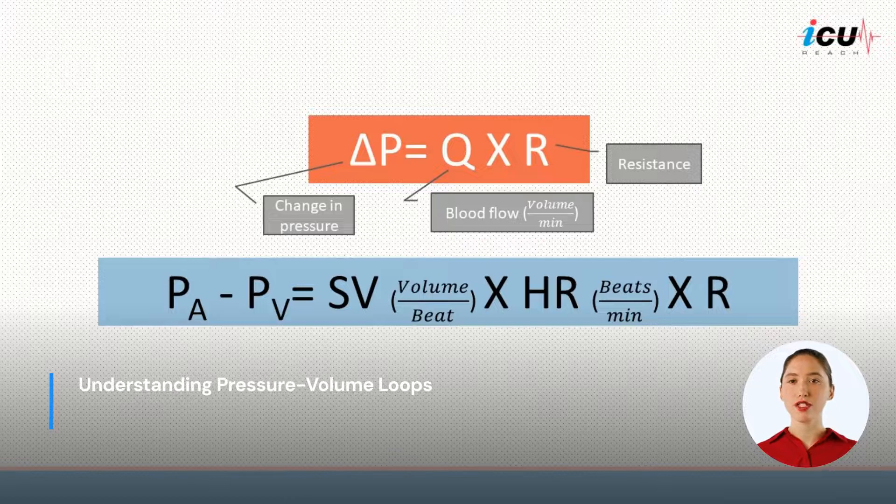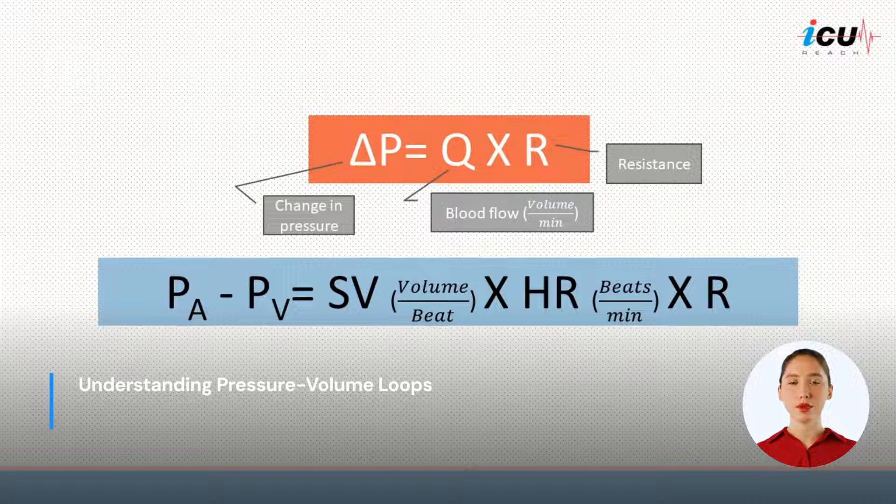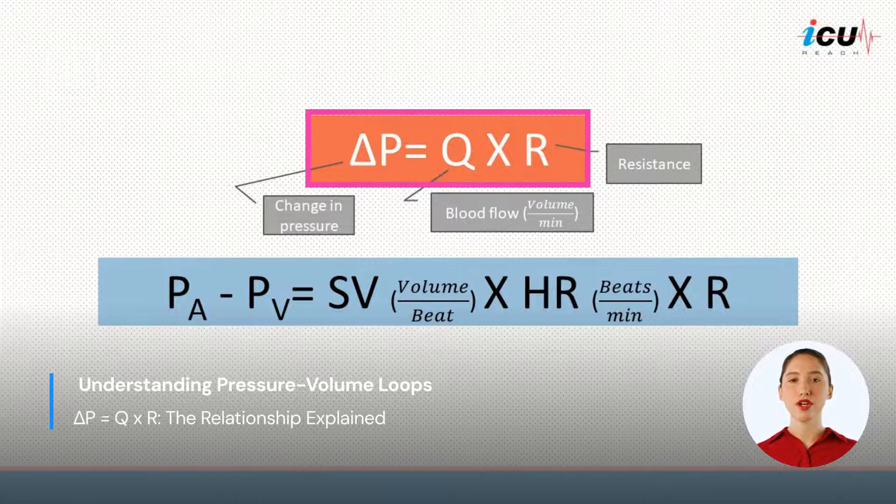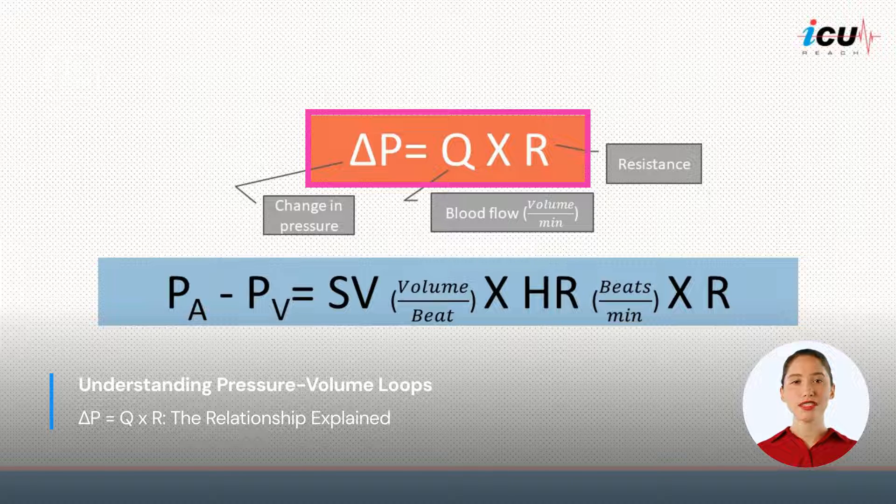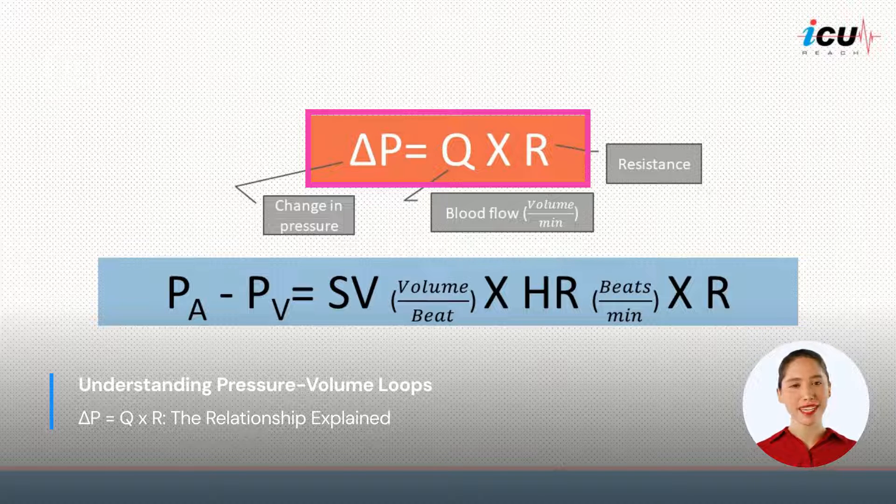We've been talking a lot about pressure volume loops, but we haven't talked about this formula: change in pressure equals flow multiplied by resistance, which is Ohm's law. You might be wondering, what's the relationship between the two? Stick with me, and you'll see that it's pretty amazing.